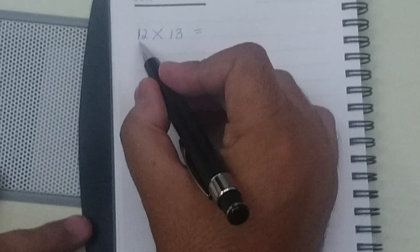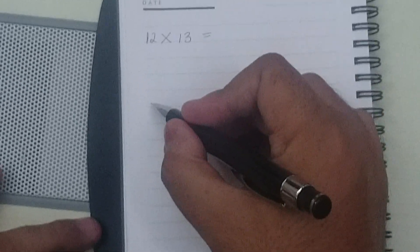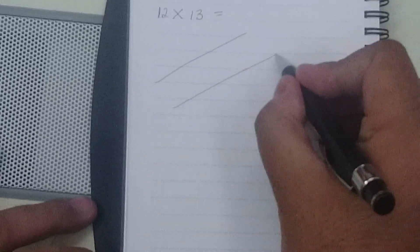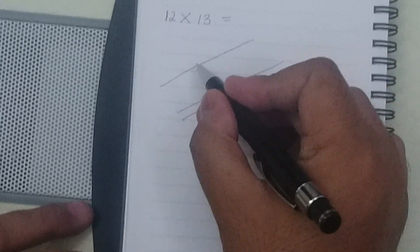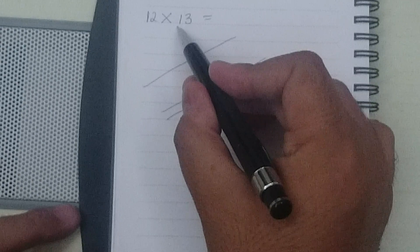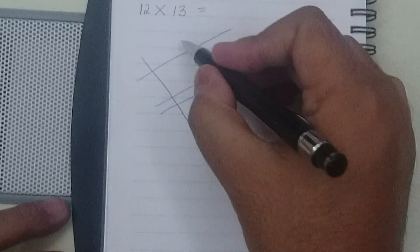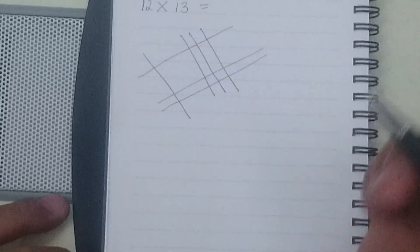So what we need to do, the first number is 12. So we will make one line like this and two lines like this. So 1 and 2. The second number is 13 which means 1 and 3. So we will put one line like this and three lines like this.